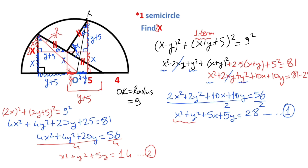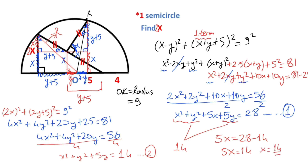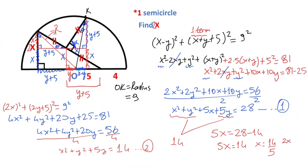Notice that we found the sum x squared plus y squared plus 5y equals 14. That means 5x equals 28 minus 14, so 5x equals 14, giving x equals 14 over 5. But notice that at the beginning we defined our segment as 2x, so the actual x is 5.6 units.